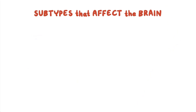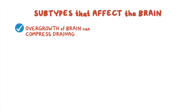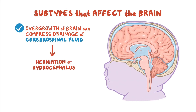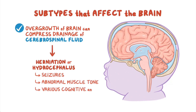Some subtypes of PROS affect the brain. Overgrowth of the brain can compress the drainage of the cerebrospinal fluid, resulting in herniation or hydrocephalus, which in turn can cause seizures, abnormal muscle tone, and various cognitive and behavioral disabilities.